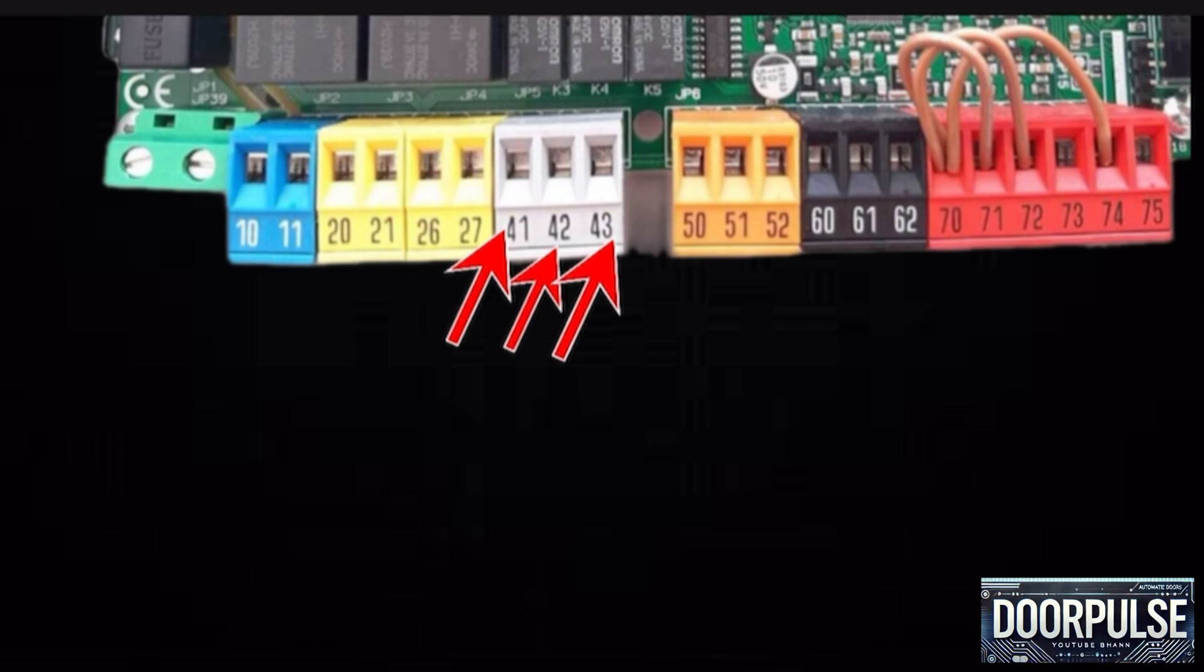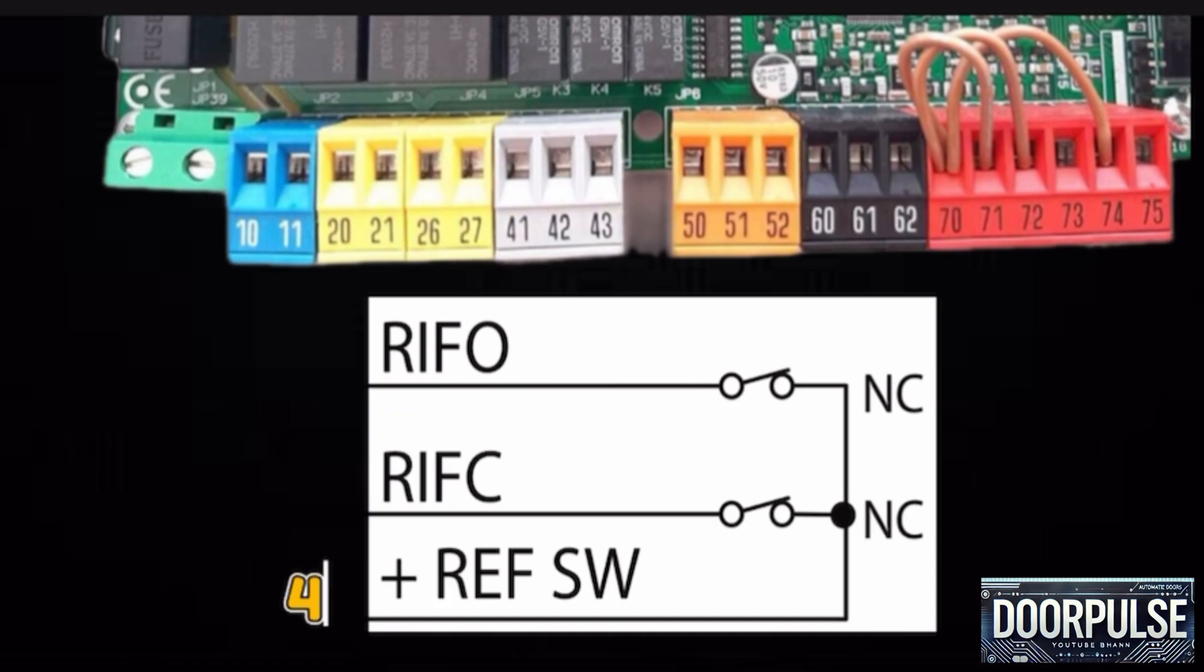Terminal 41, 42, 43 are limit switch settings. A limit switch is already connected. Terminal 41 is common reference for both. Terminal 42 reference closing RIFC NC contact. Terminal 43 reference opening RIFO NC contact.